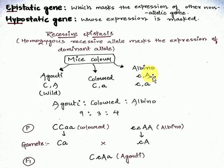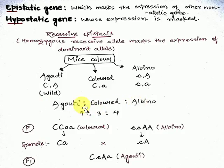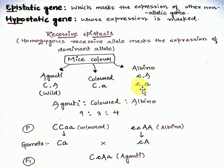When we cross these and take the F2 generation, the ratio of progenies will be: agouti (wild type, having the largest number) — 9; colored — 3; and albino — 4. The albino gets four because it includes an additional recessive case, making it 3 + 1 = 4.